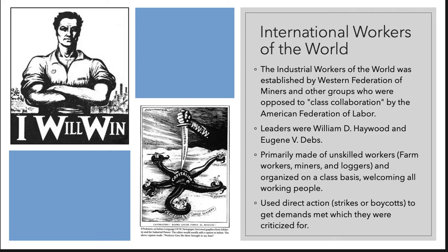Another labor union at this time was the International Workers of the World — the IWW — nicknamed the Wobblies. This was established by the Western Federation of Miners and other groups. They opposed what is called class collaboration and criticized the AFL, saying those skilled-workers-only clubs thought themselves better than everyone else. The Wobblies wanted their own labor union where anybody could freely join. Their leaders were William D. Haywood and Eugene Debs.